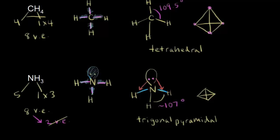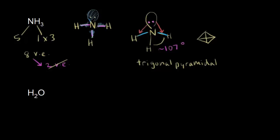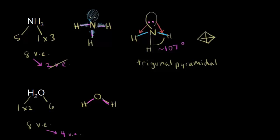Let's do one more — the water molecule, H₂O. Hydrogen is in group 1 and I have 2 of them, and oxygen is in group 6. So 6 plus 2 is once again 8 valence electrons for our dot structure. We put oxygen in the center — oxygen is bonded to 2 hydrogens. Let's see how many valence electrons we've represented: that's 2, that's 4. So 8 minus 4 is 4 valence electrons left. The hydrogens are already happy with 2 electrons, so we put those 4 valence electrons on our central atom, oxygen — 4 valence electrons means two lone pairs. Now we've represented all 8 valence electrons for water.